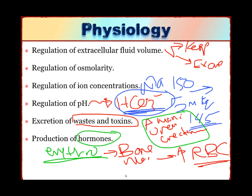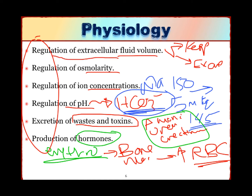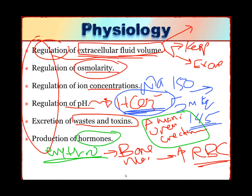We need to understand all of these functions in order to understand the symptoms that result from their decline. For example, when kidney function declines, the regulation of fluids will no longer be normal, so the patient may have fluid overload. There will be changes in osmolality, changes in pH, and accumulation of waste products. Essentially, anything the kidneys are doing — when they are diseased — they will no longer do properly.